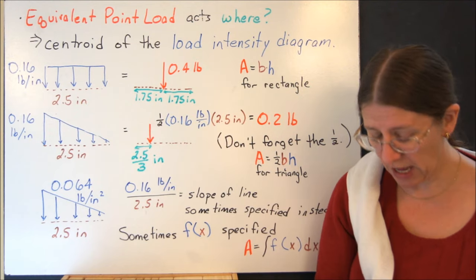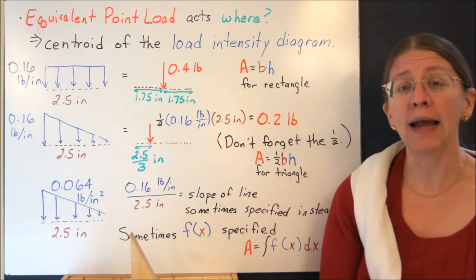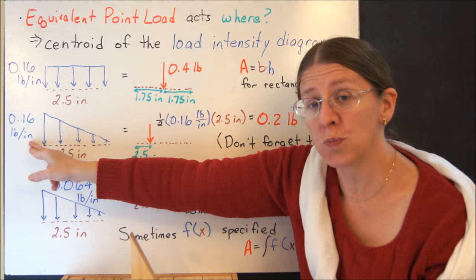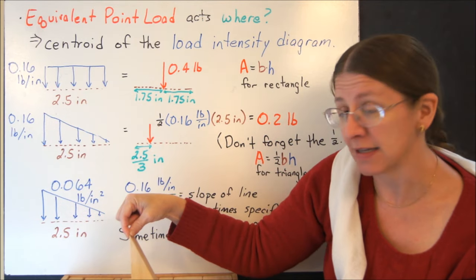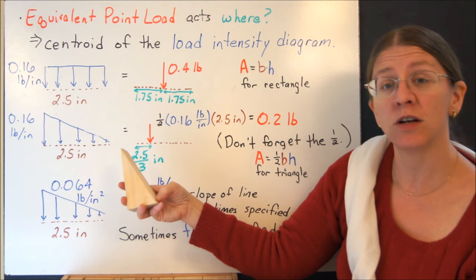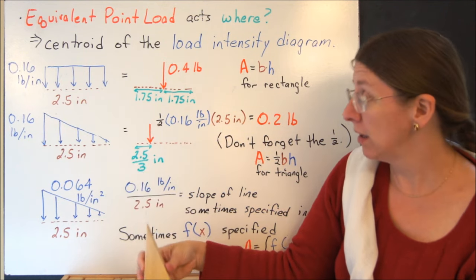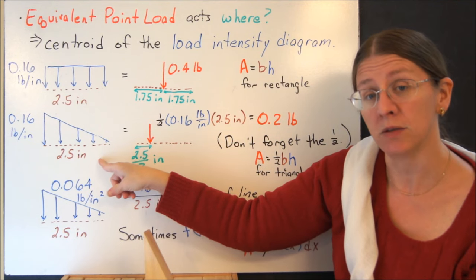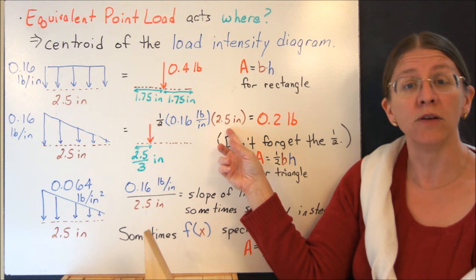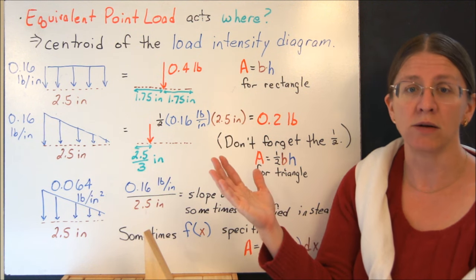Now if I took instead a nice triangular block, the force per length on this side is the same, but the force per length as I get over to this corner is going to go to 0. So my load intensity diagram looks like a triangle. How does that work? The magnitude of the equivalent point force is the area under the load intensity diagram. It's a triangle.